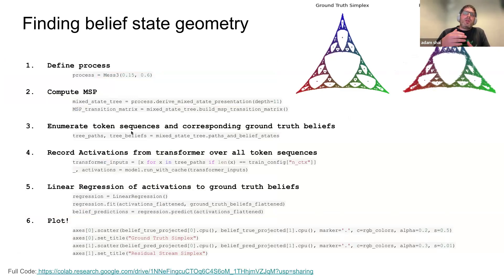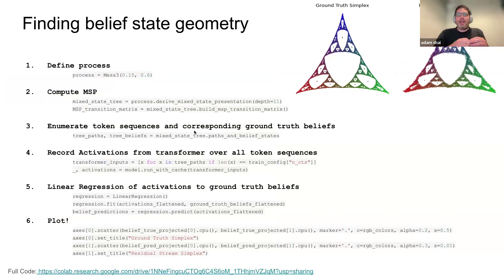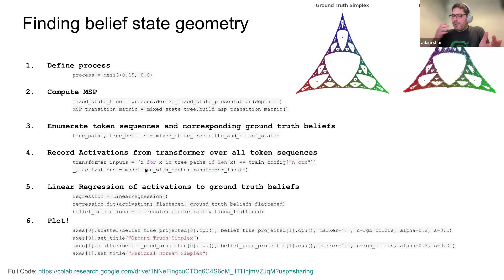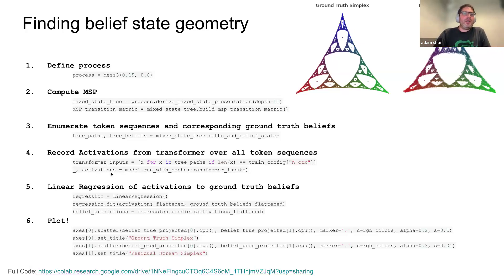To find the fractal in a transformer, the workflow is straightforward: find a process, compute the mixed state presentation, enumerate all possible token sequences the process can generate, get the ground truth beliefs from all the nodes in the tree structure, then run all those sequences through a transformer using TransformerLens. Get all the activations, and then basically do linear regression between the activations and the ground truth beliefs — and then plot the result.